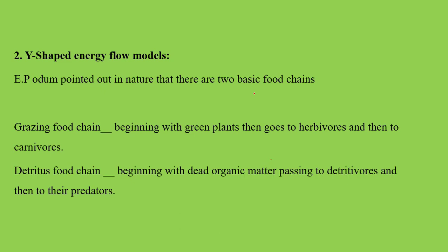One is the grazing type of food chain, and another is the detritus food chain. The grazing food chain starts from green plants, then goes to the herbivores and then to the carnivores. The detritus — meaning dead decaying organic matter, whether plants or animals — is the one that starts with dead decaying organic matter, then passes to the detritivores like mollusks, worms, and then passes to their predators.